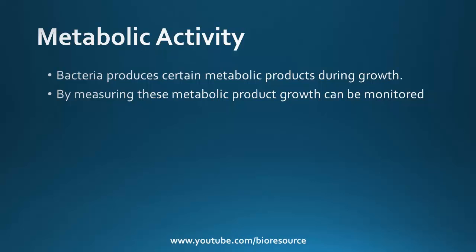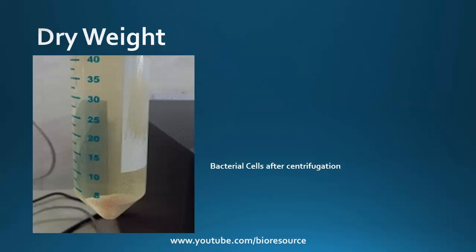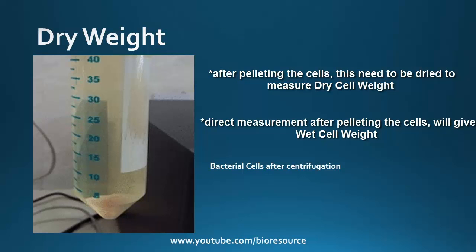The other method includes metabolic activity. As the bacteria grow in the media, they produce certain byproducts or other metabolic compounds, so the measurement of such metabolic products can be used for monitoring the growth. The other method is the dry weight measurement. The cells are centrifuged and the cell pellet is weighed. This technique will not distinguish the live and dead cells.